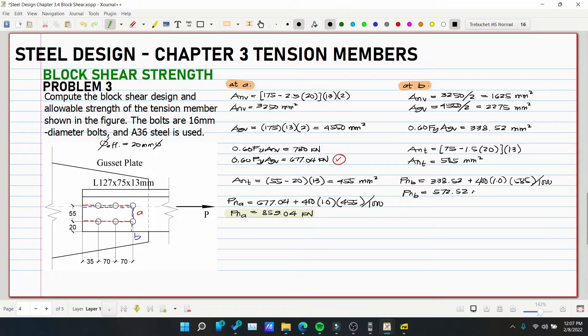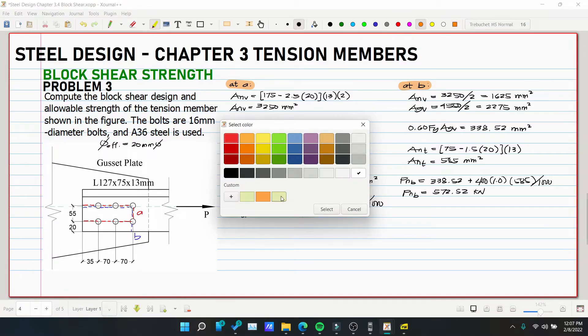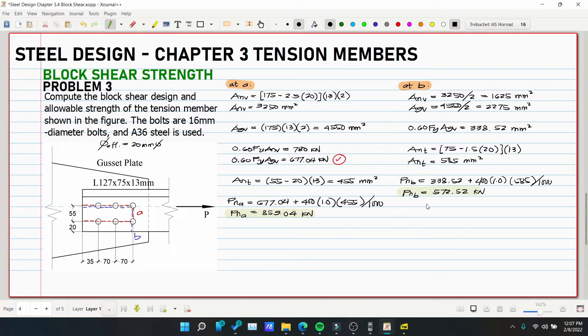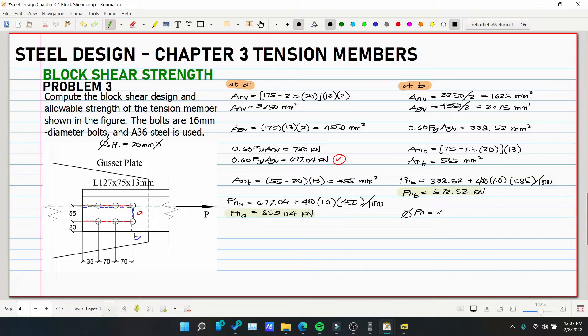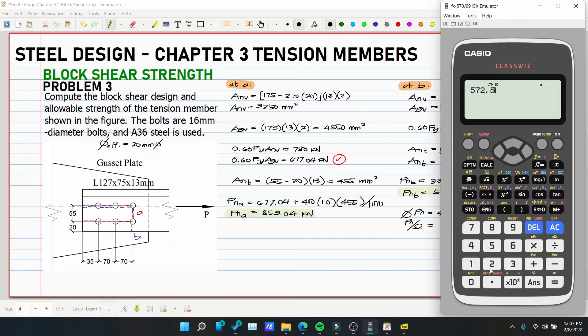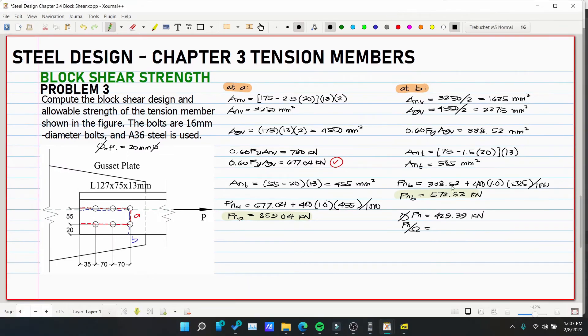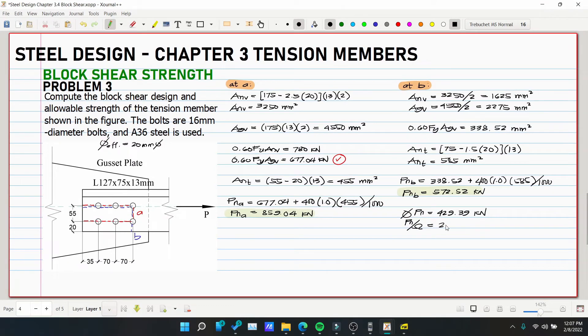So this is still the faster failure path. So that means our design strength is 572.52 multiplied by 0.75. So 429.39 kilonewtons. And PN over omega, 572.52 over 2.0. So 286.26 kilonewtons.